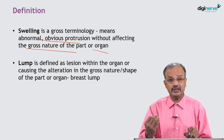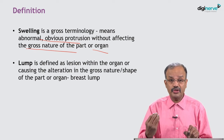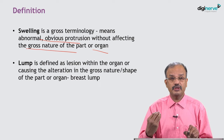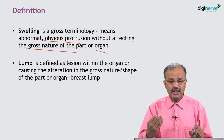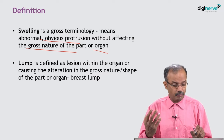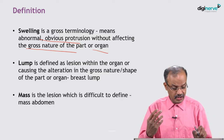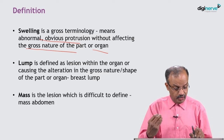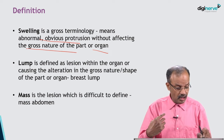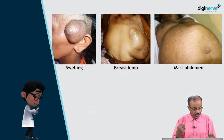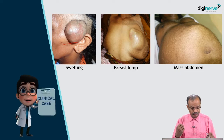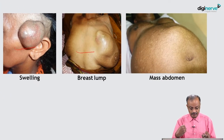An example of a lump is a breast lump. There is a clinical difference between swelling and lump. One more terminology is 'mass,' which is similar to swelling but the difference is that it usually arises from the deeper plane. A mass is a lesion that is difficult to define and arises from the deeper plane — for example, a mass abdomen. These figures clearly illustrate how these terminologies are used in different situations: swelling on the surface, breast lump from the organ, and mass abdomen from the deeper plane.